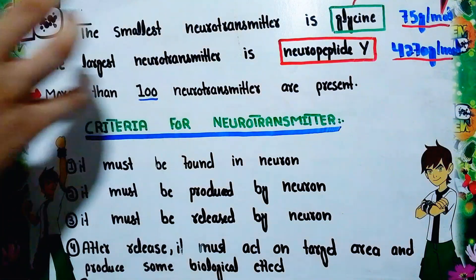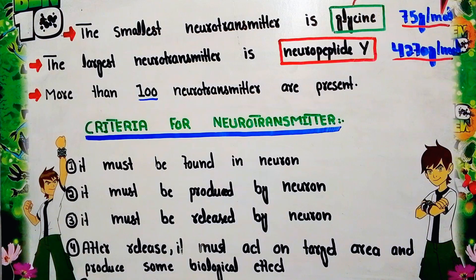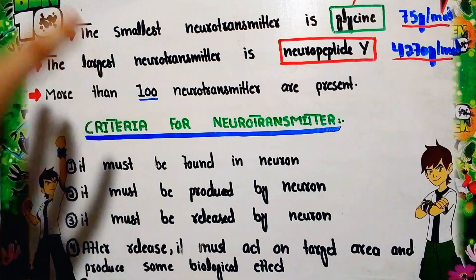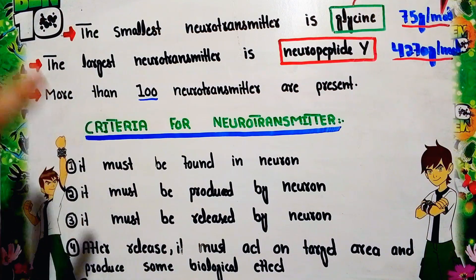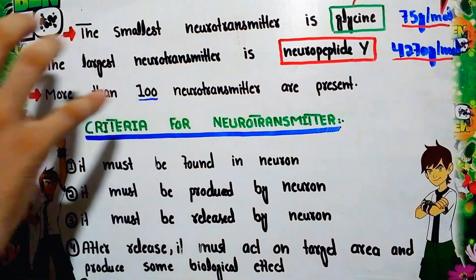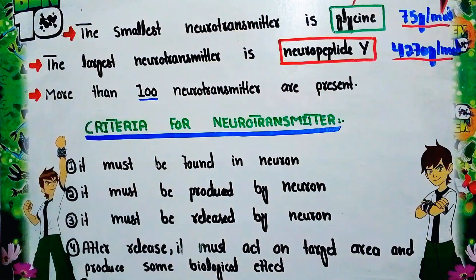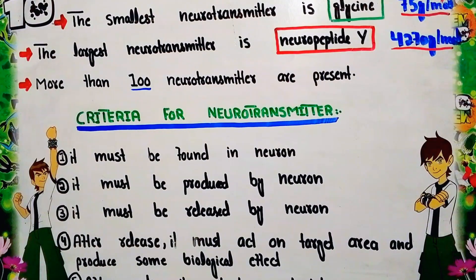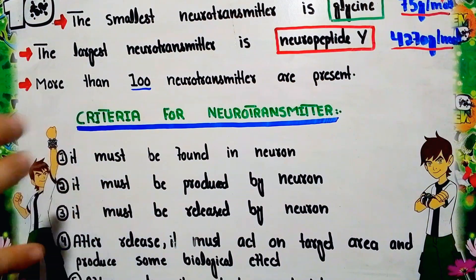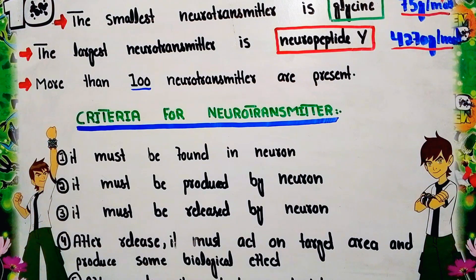Now we will discuss the criteria for a neurotransmitter — the conditions a chemical substance must fulfill to be considered a neurotransmitter. The first criterion is that it must be found in the neurons. The second criterion is that it must be produced by neurons.